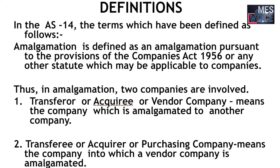According to Accounting Standard 14, amalgamation is defined as an amalgamation pursuant to the provisions of the Companies Act 1956 or any other statute which may be applicable to companies. In amalgamation, there are two companies involved: first, the transferor company, and second, the transferee company.